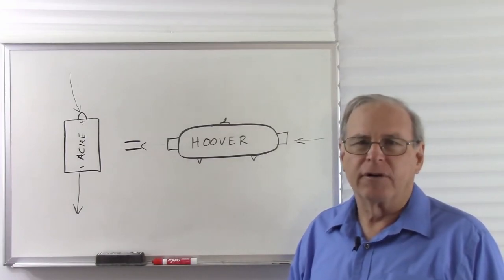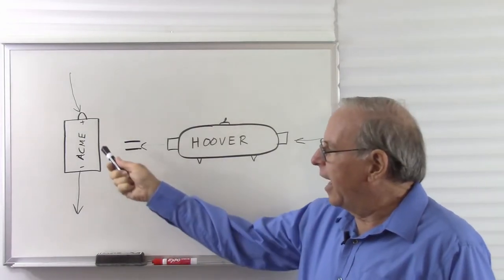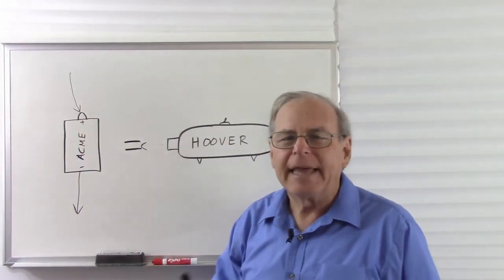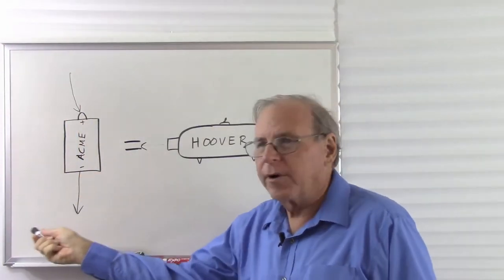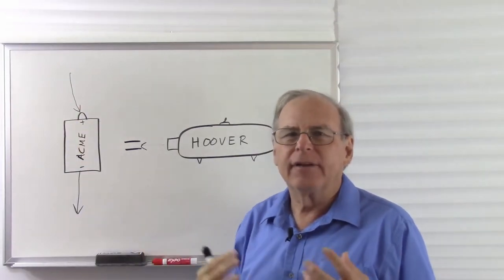Some people, the electron flow camp, see electricity as flowing from negative to positive. But that gives us a fluid going from a lower pressure to a higher pressure. That doesn't make a lot of sense. It's difficult to wrap your mind around.